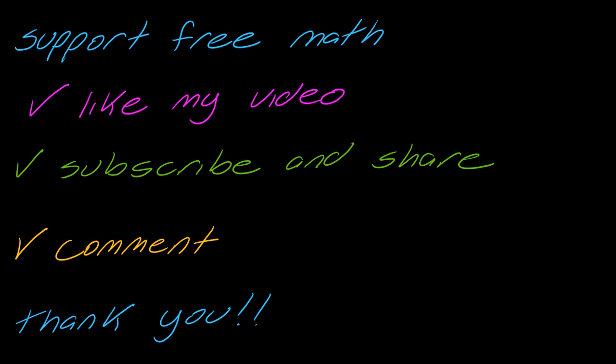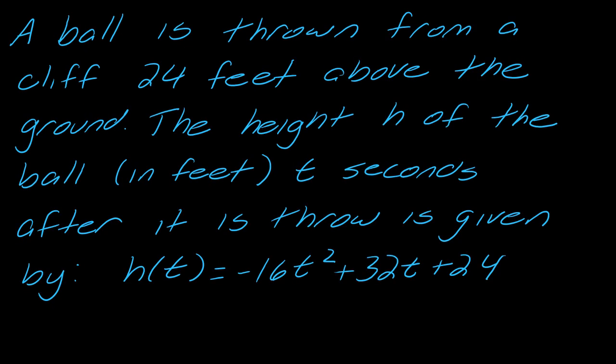Okay, so let's get into it. A ball is thrown from a cliff 24 feet above the ground and the height h of the ball in feet t seconds after it is thrown is given by this equation here.